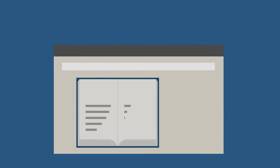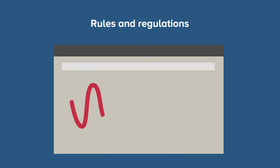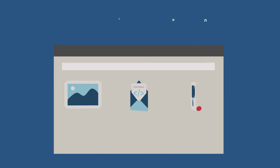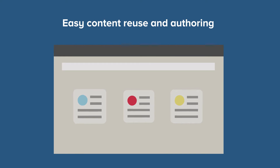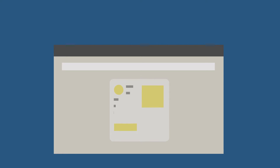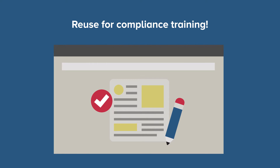Another important piece of content that should be in your onboarding course is your company's internal and industry-wide rules and regulations. You can leverage eFront Pro's easy content reuse and authoring capabilities to make simplified versions of all of these available to new hires, giving them the option to consult their full versions whenever they need to. And this content can be extra useful if reused for compliance training.